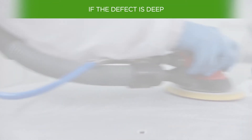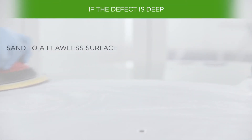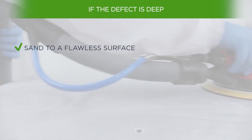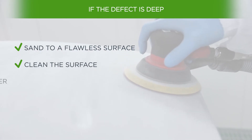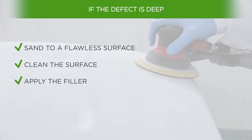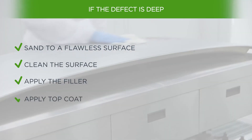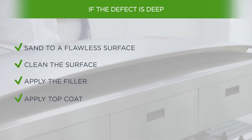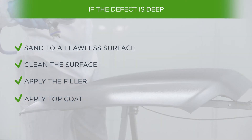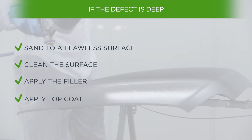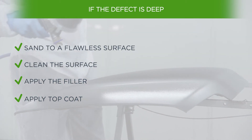With larger solvent boils, it is advisable to carry out the painting process again from scratch. Prepare the part, sanding it until it reaches a surface without defects, then apply the primer filler, and finally the top coat.